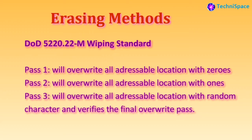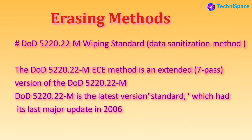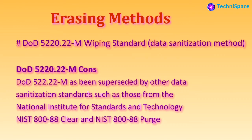The DoD wipe method is a software-based data sanitization standard for the US government, used in file shredder and data destruction programs to overwrite existing information on hard drives or other storage devices. It is implemented as follows: Pass 1 overwrites all addressable locations with zeros; Pass 2 overwrites all addressable locations with ones; Pass 3 overwrites all addressable locations with random characters and then verifies the final overwrite pass. There is also an extended version with seven passes.